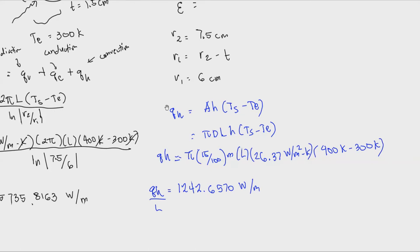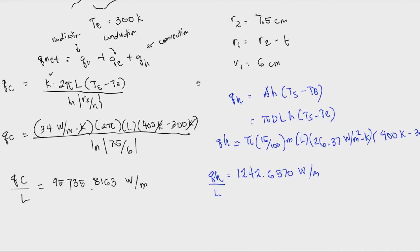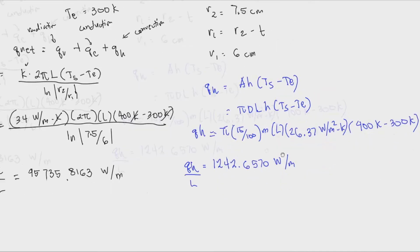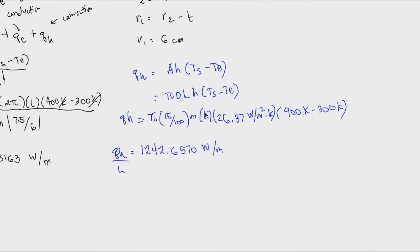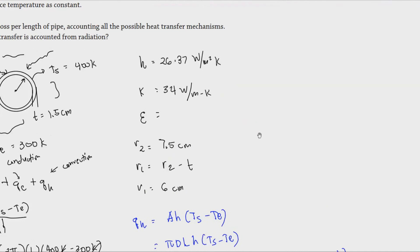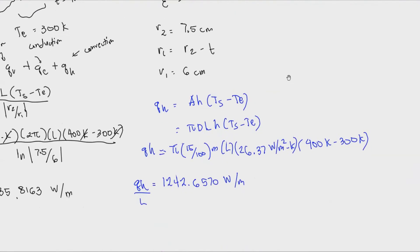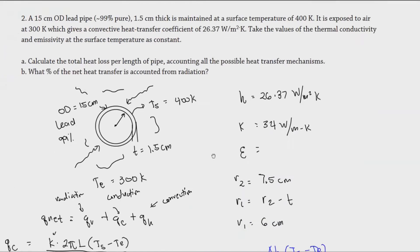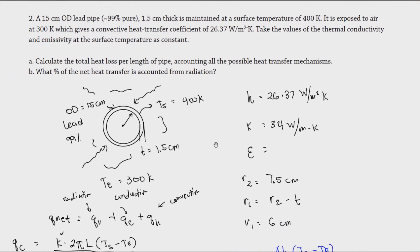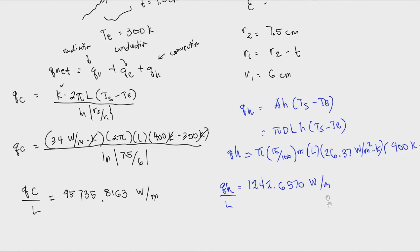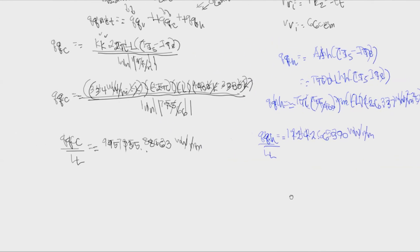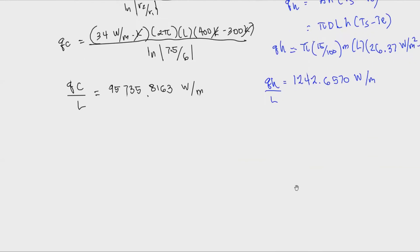Convection was straightforward because h was given. If it weren't, we would need to calculate the Reynolds number and Nusselt number, and determine the flow regime — turbulent, laminar, or transitional. This problem simplifies things by providing h directly.